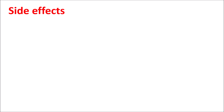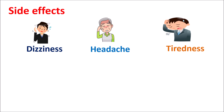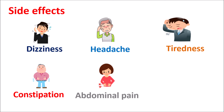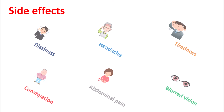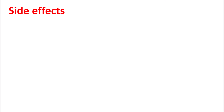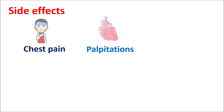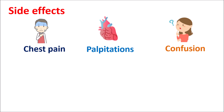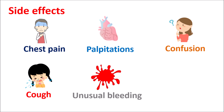Now let us see the side effects of this drug. Flecainide mainly produces dizziness, headache, and excessive tiredness. It can also produce gastrointestinal side effects like constipation and abdominal pain, as well as some change in vision — blurred vision. Apart from these, we can also observe cardiac side effects like chest pain, palpitations, awareness of heartbeat, confusion, cough, and unusual bleeding. It can also increase edema and leg swelling. These are the common side effects that can be produced by Flecainide.